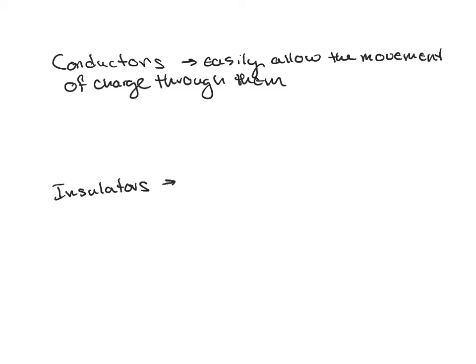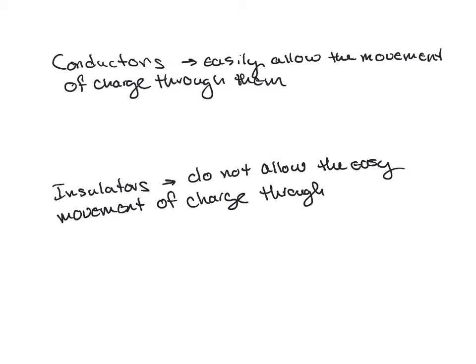Insulators, on the other hand, do not allow the easy movement of charge through them. So these materials are going to have a way of better holding onto their electrons so they don't get pushed from one atom to the next and actually flow through the object.